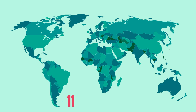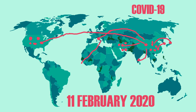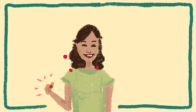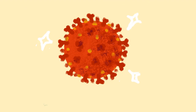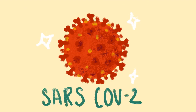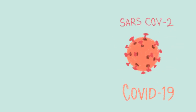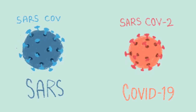On February 11, 2020, the WHO announced COVID-19 as the name of the new disease spreading at an alarming rate throughout the world. COVID-19 is an infectious respiratory disease caused by a novel strain of coronavirus called SARS-CoV-2, which stands for Severe Acute Respiratory Syndrome Coronavirus 2. It is closely related to the virus which caused the 2002 outbreak of Severe Acute Respiratory Syndrome, which was called SARS-CoV.